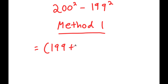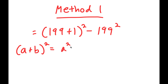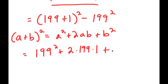So now I get 199 plus one, squared, minus 199 squared. From here I can use the algebraic property that states if I have something in the form a plus b squared, this is equal to a squared plus 2ab plus b squared. So 199 plus one, squared, I'm going to write as 199 squared plus two times 199 times one, plus one squared. And at the end I have minus 199 squared.